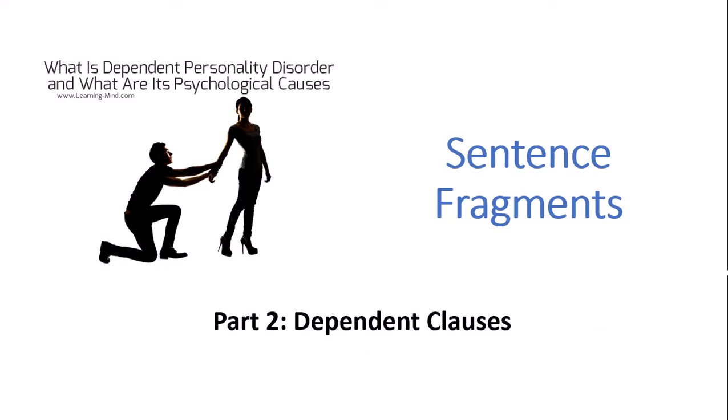Hi everyone and welcome back. So today we are talking about sentence fragments and this is part two of four short lectures on dependent clauses. I put this picture in what is dependent personality disorder and what are its psychological causes because it shows what that word dependent actually means. He cannot stand up by himself. He's dependent on his girlfriend.